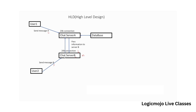So user 1 is sending data to user 2 and user 2 is sending data to user 1, and that can happen at the same time. User 2 sends to its own server B, and server B searches for chat server A for user 1, sends message B to chat server A, which delivers it to user 1. Similarly, chat server B delivers message A to user 2. As soon as the chat server sends data to the desired user, it also updates that into the database, so if user 1 wants to scroll up and see the chat history, we can easily provide that.